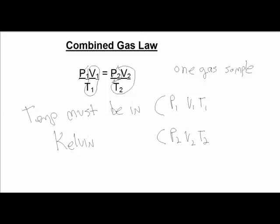For example, if P₁ is in the units of atmospheres, then P₂ must also be in the units of atmospheres. So the units will cancel out on both sides of the equation.